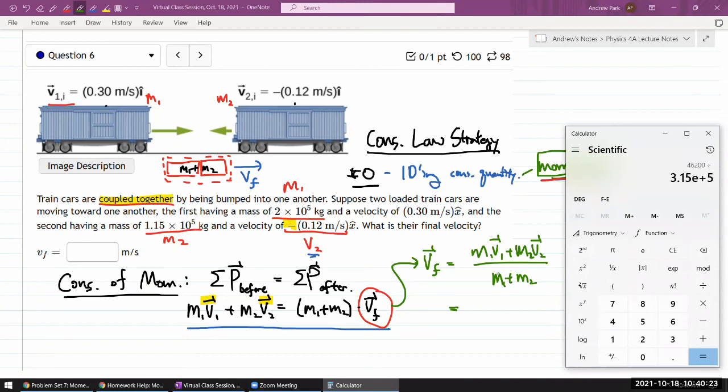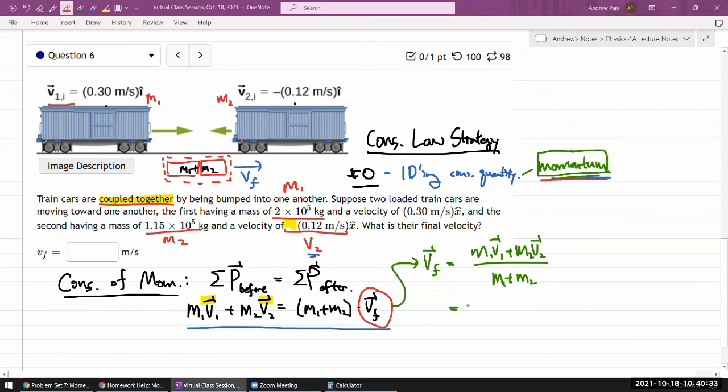Do that division. So kilograms will cancel. I'll get an answer in meters per second. So I have 0.147 meters per second. And yeah, that's it. So this second train slowed down the first train a little bit as it's moving to the positive x direction. But it didn't quite stop it. It just slowed down a little bit from 0.3 to 0.147.